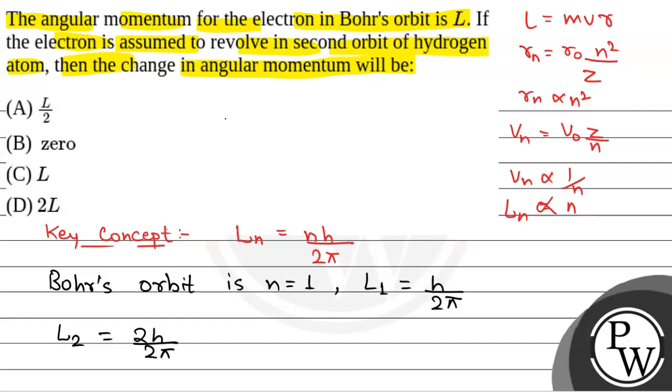Therefore, change in angular momentum, i.e. delta L, will be given by L2 minus L1 which is equal to 2h by 2π minus h by 2π, which is equal to h by 2π, which is equal to L. So, the correct option will be option C, L. Hope you understood. Best of luck.